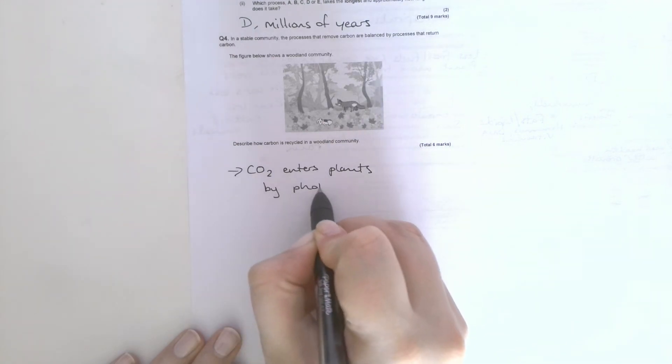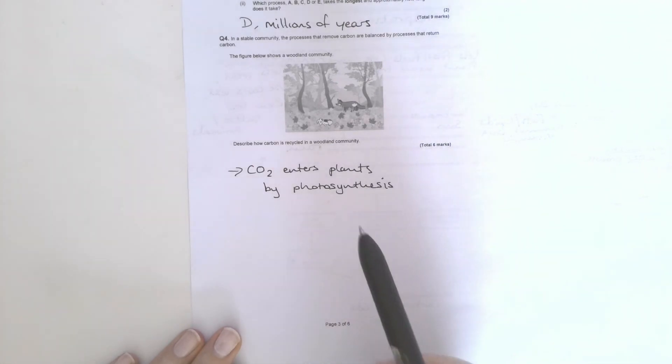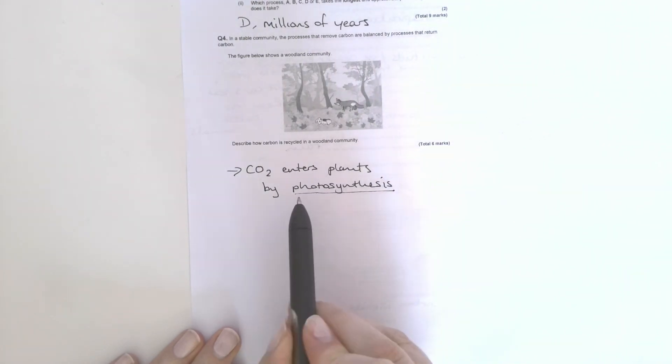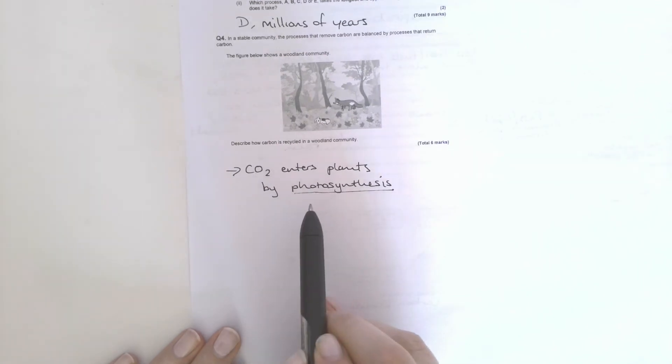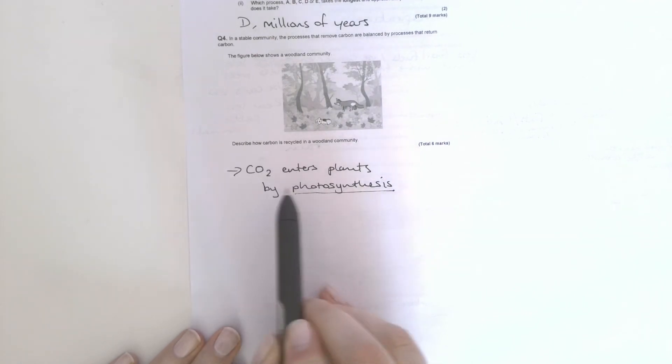Quite a few of you were telling me where the carbon was going but not naming the process. Some of you were naming the process but not saying that carbon dioxide enters plants by that way. Some of you were just saying carbon. You need to be a bit more specific, so carbon dioxide enters plants by photosynthesis.